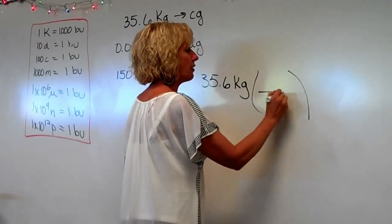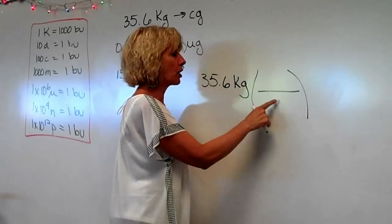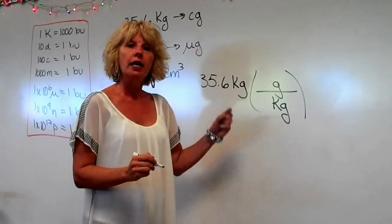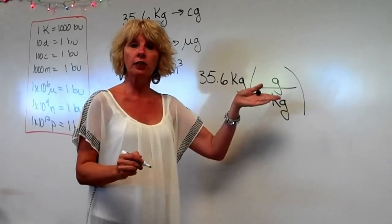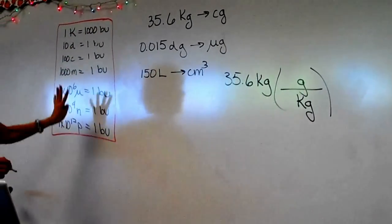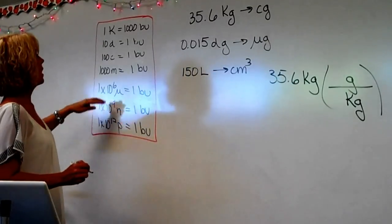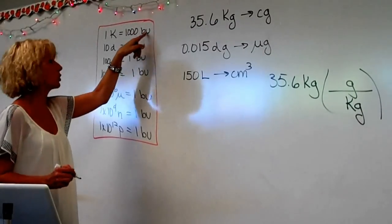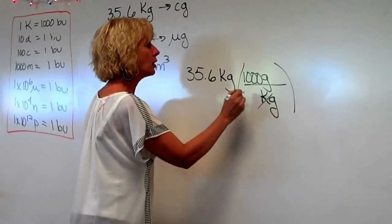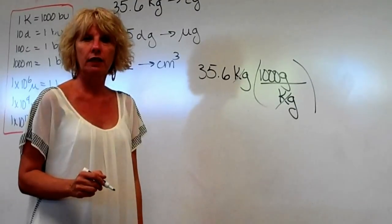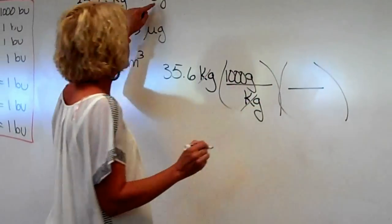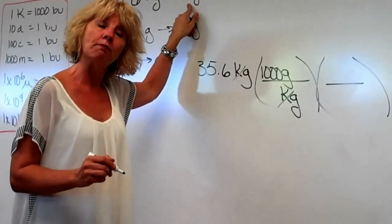Let's look at this problem: we want to change 35.6 kilograms to centigrams using unit analysis. So let's write down 35.6 kilograms. Since kilograms is on top, we're going to put kilograms on the bottom and grams on the top. From the table, there are a thousand basic units per kilo, so we put 1,000 here. Kilograms now cancels out, but I don't want my answer in grams — I want centigrams, so we have to go one more step.